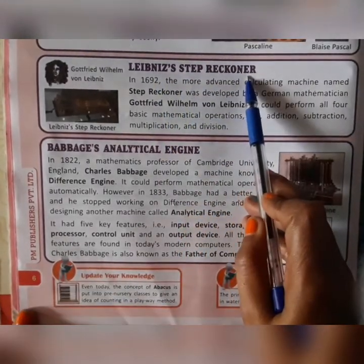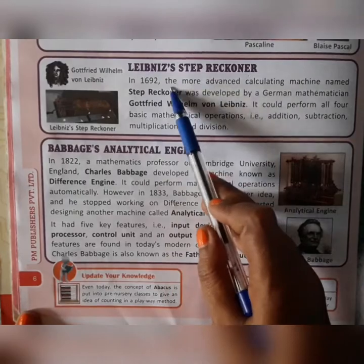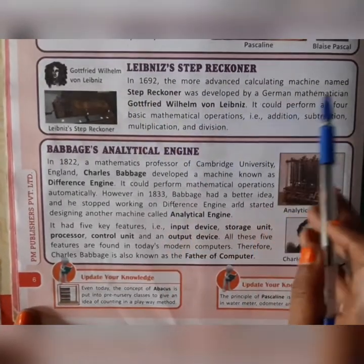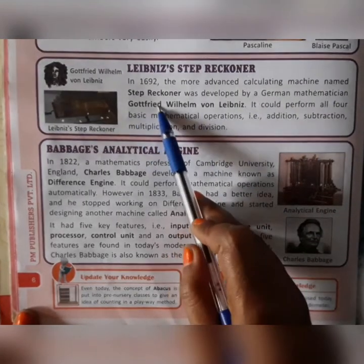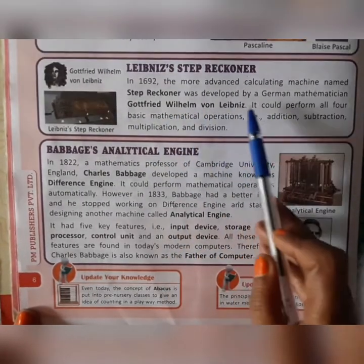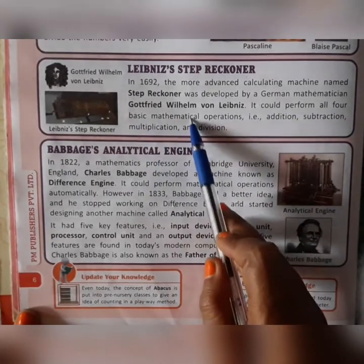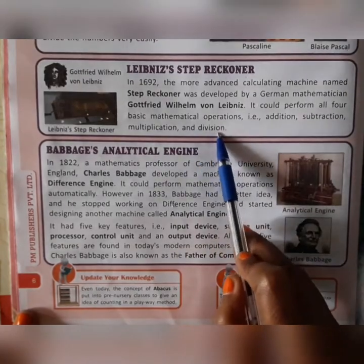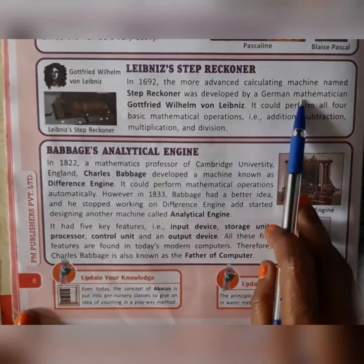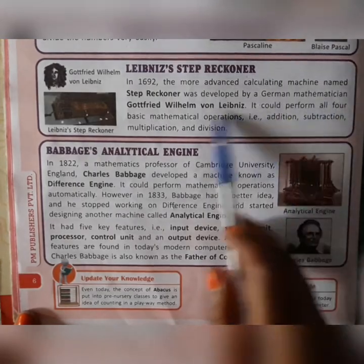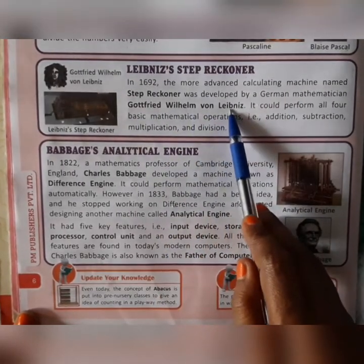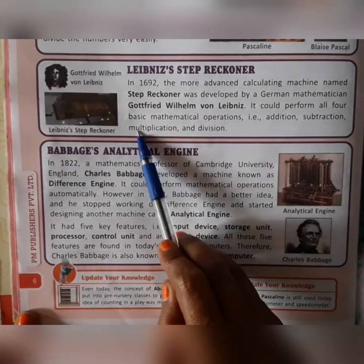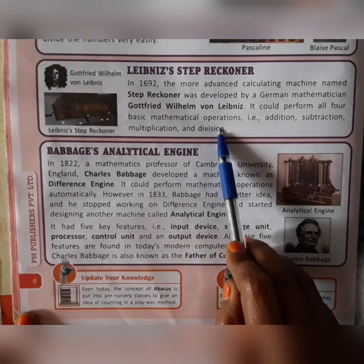In 1692, a more advanced calculating machine named the Step Reckoner was developed by German mathematician Gottfried Wilhelm Leibniz. It could perform all four basic mathematical operations: addition, subtraction, multiplication, and division.